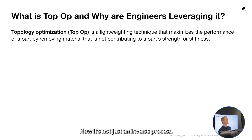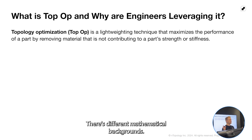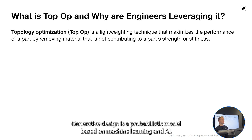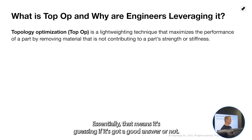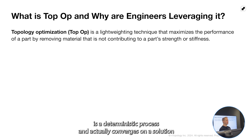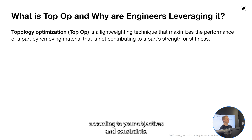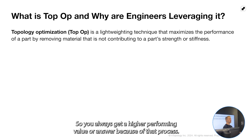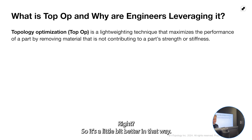It's not just an inverse process — there are different mathematical backgrounds. Generative design is a probabilistic model based on machine learning and AI, which essentially means it's guessing if it has a good answer or not. Topology optimization is a deterministic process and actually converges on a solution according to your objectives and constraints, so you always get a higher-performing answer because of that process.